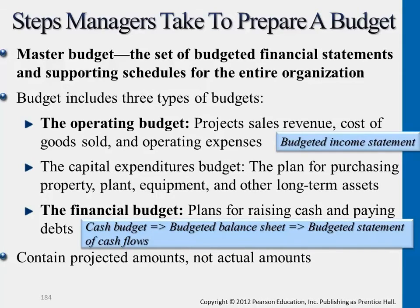This entire chapter will end up with a lot of budgeted statements, which many of them look exactly the same as what you learned in financial accounting. The only difference is that these are anticipated, expected numbers — not the actual numbers. Budget means an expected plan for the future, so all the statements we're getting to are anticipated numbers. When we actually get to actual numbers, we will do a performance report to compare the two.